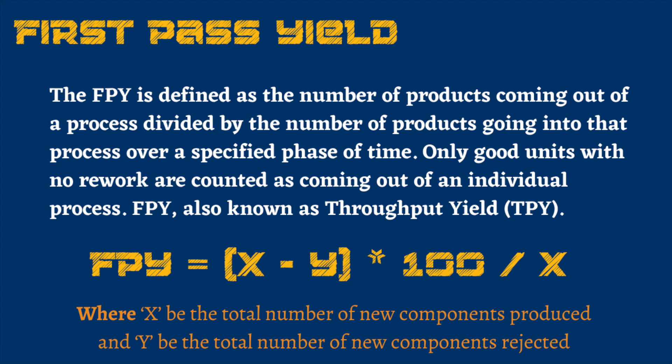So how can we calculate the good units? We take the difference of the number of components produced and the number of new components rejected. That difference gives you only the good components produced. Then we divide it by the total number of components produced.